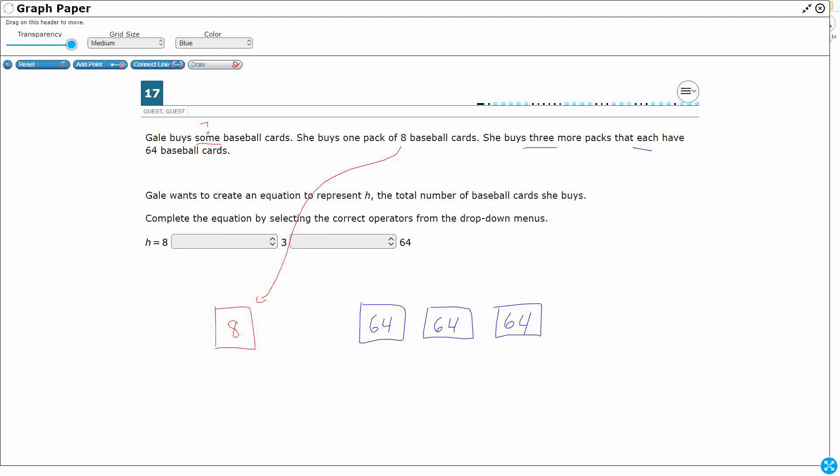Right. So we select the operators. Well, I mean, first off, we can figure out how many baseball cards she's got, because she's got eight, plus 64, plus 64, plus 64, right? So let's just line them up. Let's see how many we have.